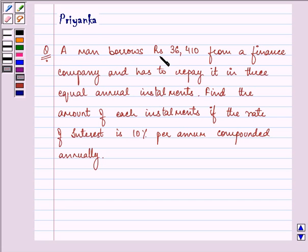A man borrows Rs. 36,410 from a finance company and has to repay it in three equal annual installments. Find the amount of each installment if the rate of interest is 10% per annum compounded annually.